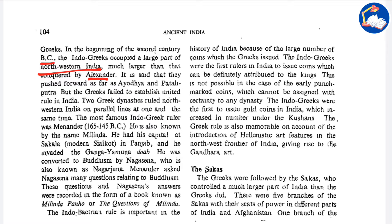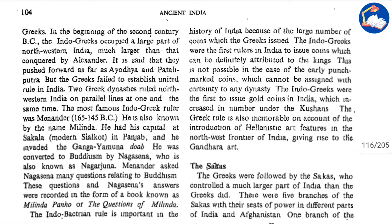It is said that they pushed forward as far as Ayodhya and Pataliputra, but the Greeks failed to establish united rule in India. The two Greek dynasties ruled northwestern India on parallel lines at the same time. The most famous Indo-Greek ruler was Menander, also called Milinda. He had his capital in Sakala, or modern Sialkot in Punjab, and he invaded the Ganga-Yamuna Doab.